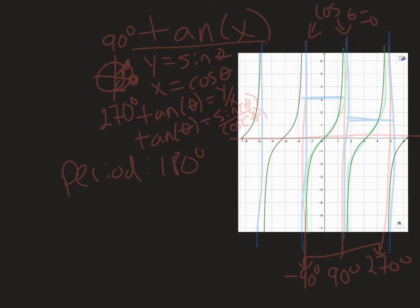Tangent doesn't necessarily have an amplitude like sine and cosine. If we had, say, y equals 2 tangent of x, it might be a little steeper, but it's not really going to affect the overall shape of the graph. Likewise, it'll be affected by horizontal shifts and phase shifts in the same way that sine and cosine would. It's just going to move the asymptotes left and right.